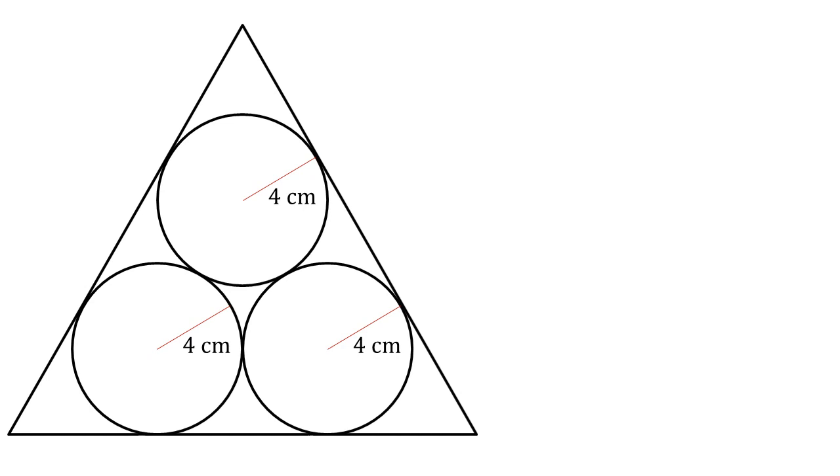In this geometry problem, we're given an equilateral triangle. Inside this triangle are three circles, each with radius four centimeters, and they're inside the triangle such that they're all touching each other. And each circle has two edges of the triangle as a tangent to it.